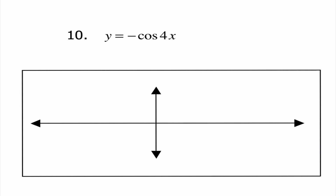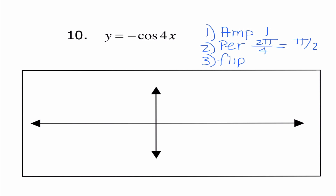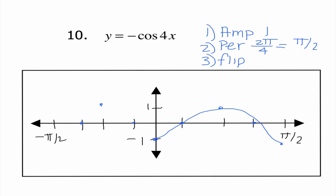Last but not least, y equals negative cosine of 4x. Our amplitude is 1, our period is 2 pi divided by 4, which is pi over 2, and there is a flip. I label pi over 2 and -pi over 2, with 1 and -1 on the y-axis. Cosine flipped starts at the negative amplitude, then I complete the pattern. I continue that pattern on the left as well so that we graph two full periods.